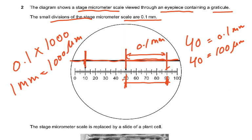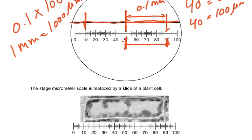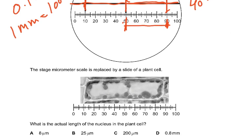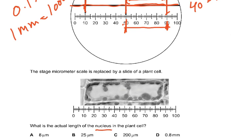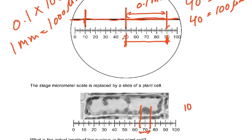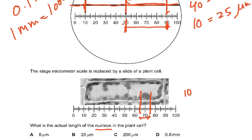Then the stage micrometer is replaced by a plant cell and you are asked for the actual length of the nucleus. The nucleus spans 10 graticule units — from 65 to 75. Since 40 units equals 100 micrometers, 1 unit equals 2.5 micrometers, so 10 units equals 25 micrometers. That is why the answer is B.